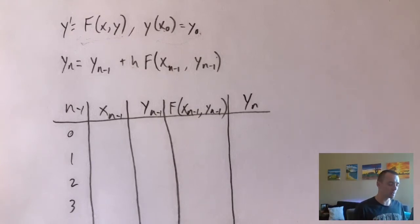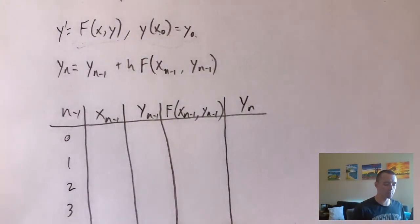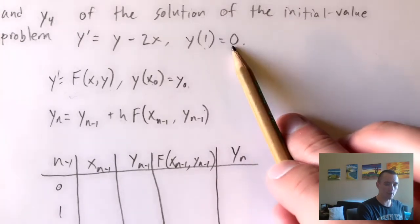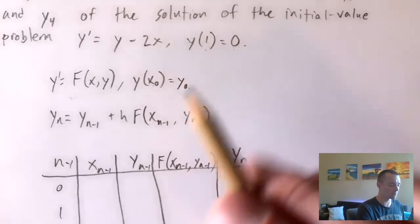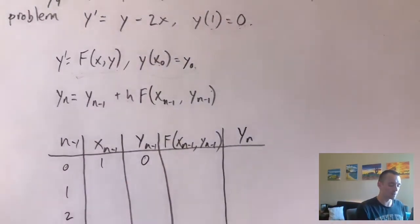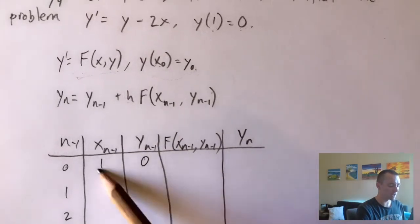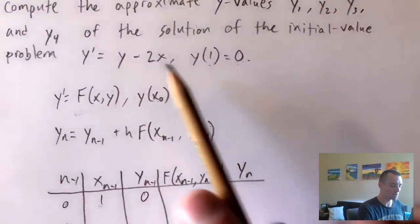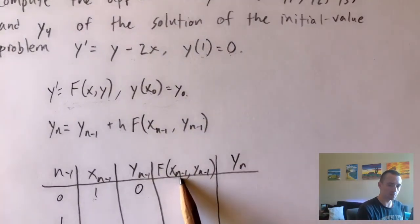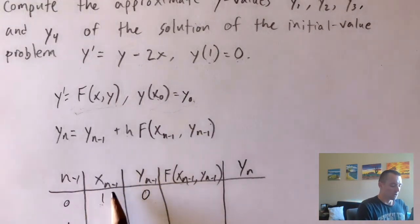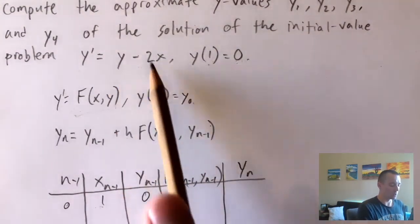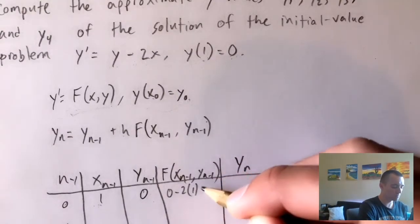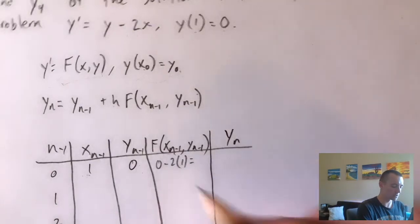We start with the information we were given. Our first x value is x₀ = 1 and our first y value is y₀ = 0. Then we plug these into f(x, y) = y − 2x: plugging in x = 1 and y = 0 gives us 0 − 2(1) = 0 − 2 = −2.